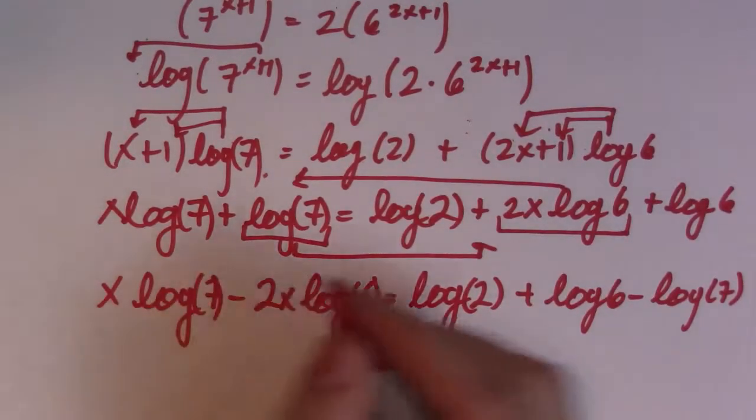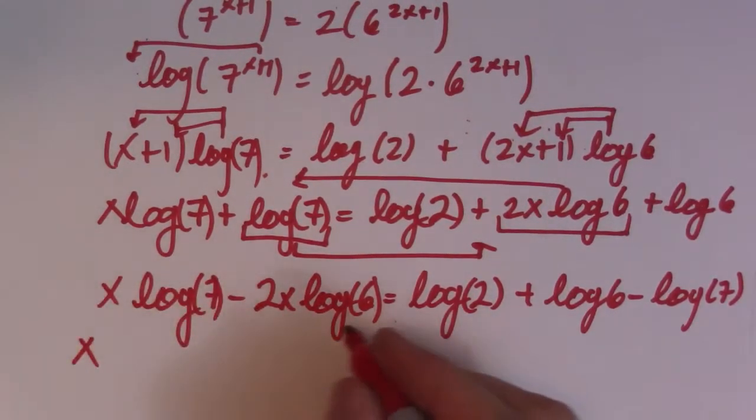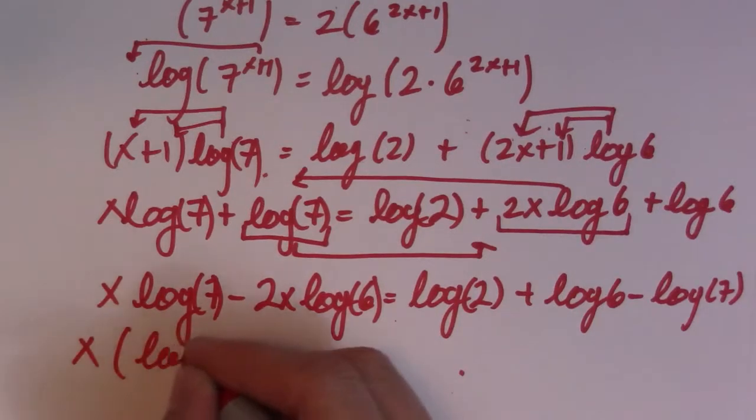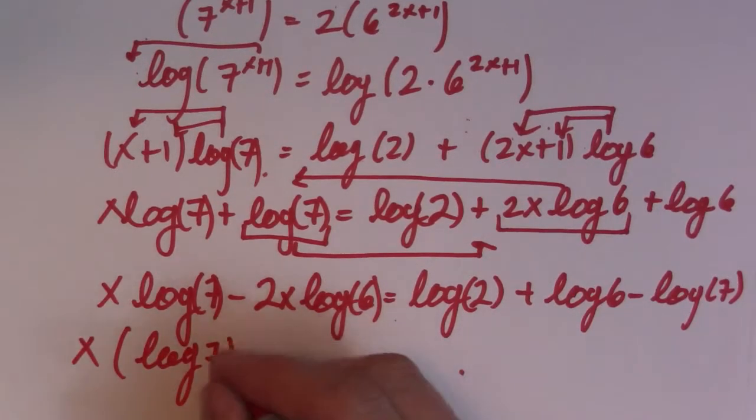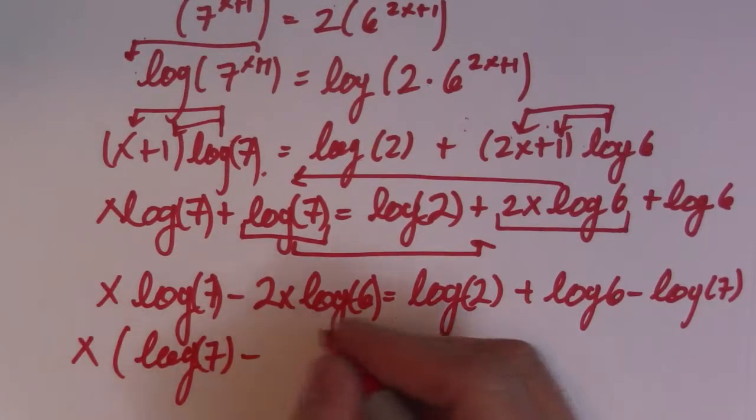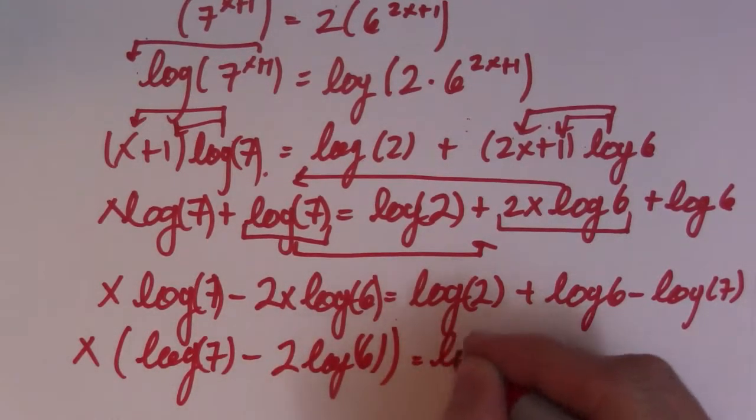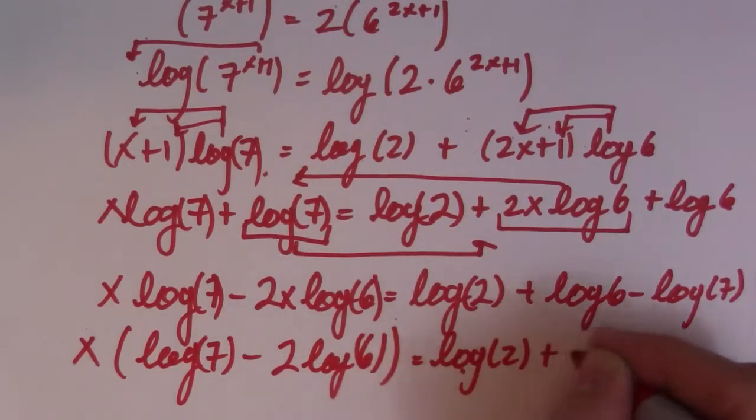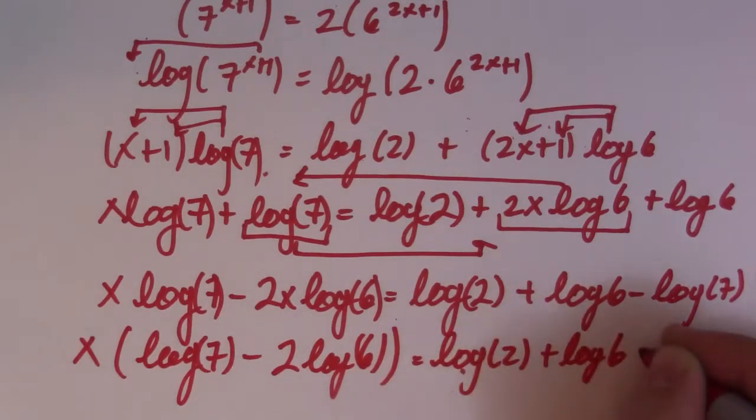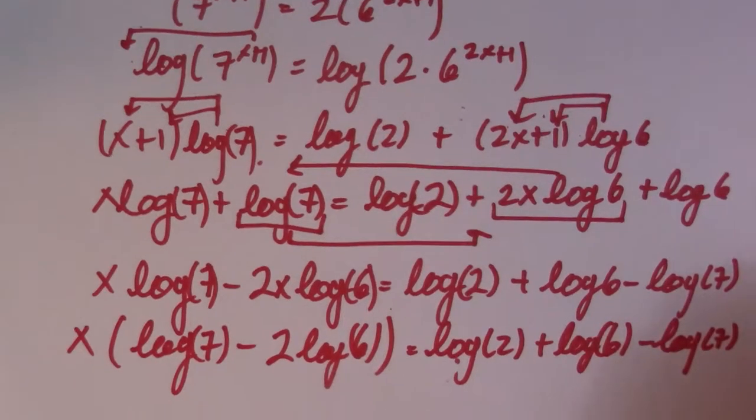And then I divide. Well, I take an x out first. So I take an x out and I get left with log of 7 minus 2 log of 6. So you get a log of 2 plus log of 6 minus log of 6 minus log of 7. Just like that.